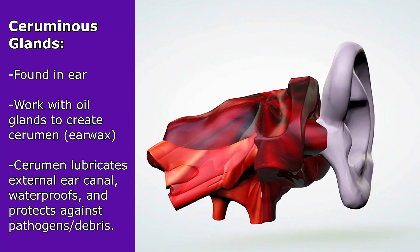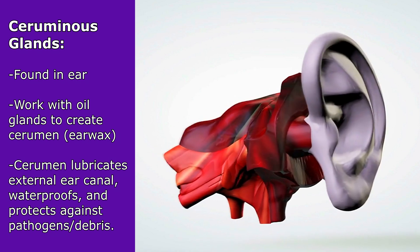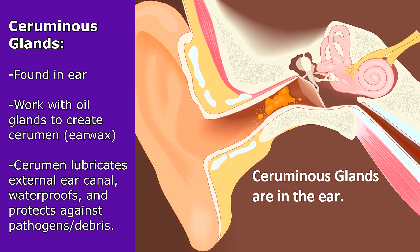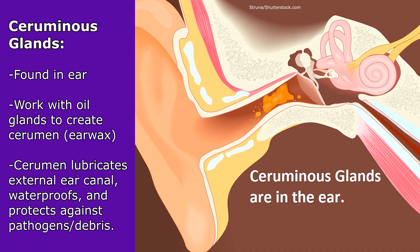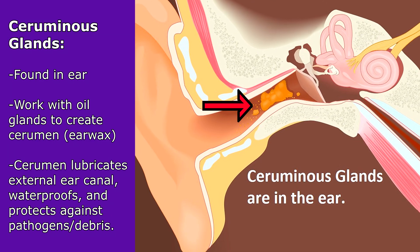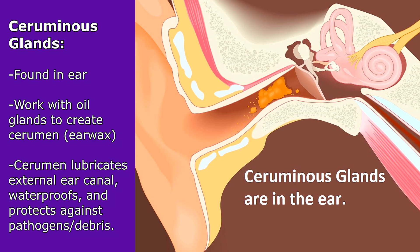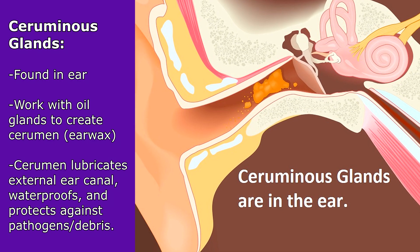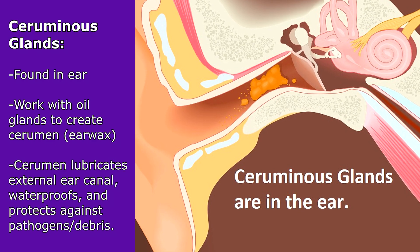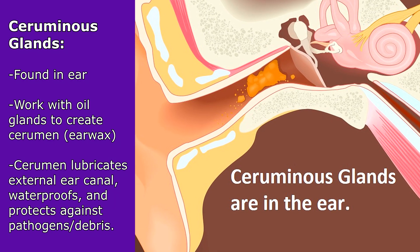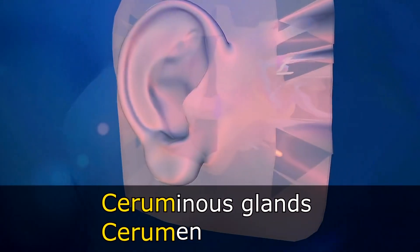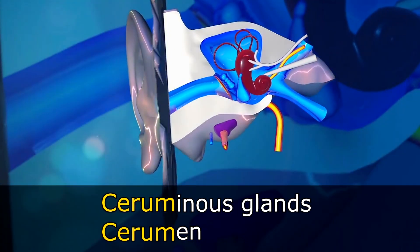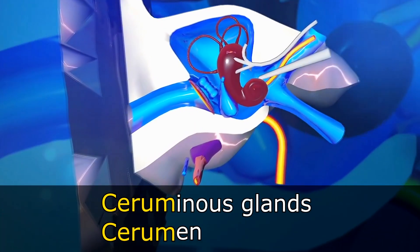One type of modified sweat gland is called a ceruminous gland. This works with the oil-secreting sebaceous glands to create a substance known as cerumen, or earwax. Earwax provides the important function of lubricating and waterproofing the external ear canal, as well as protection against pathogens, random debris, and so forth. Both the gland and the product it produces start with C-E-R-U-M, so that helps you remember that these two go together.